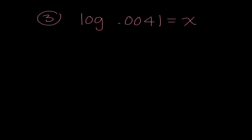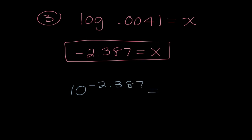Number three is as easy as it's going to get because X is already isolated. So I'm just going to have to evaluate what is log of .0041. I'm going to put that in my calculator, and I get negative 2.387 is equal to X. And I just want to remind us what this means. What we just found is that 10 to the negative 2.387 power is equal to .0041.